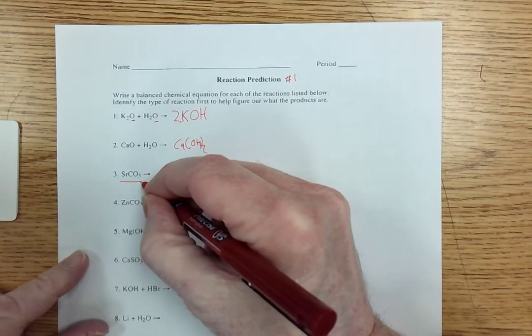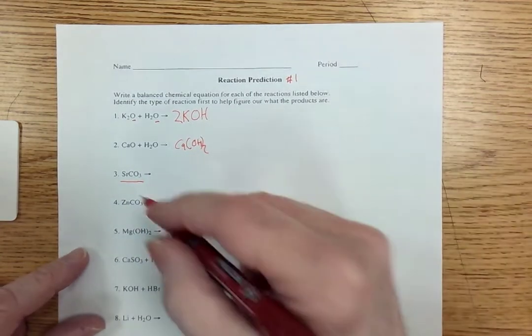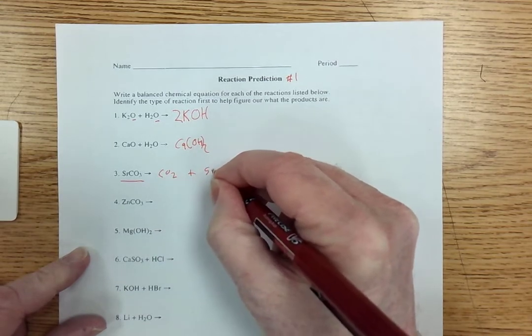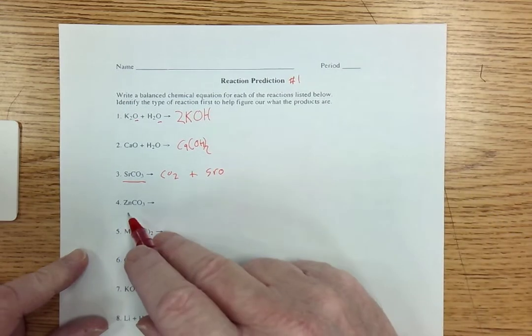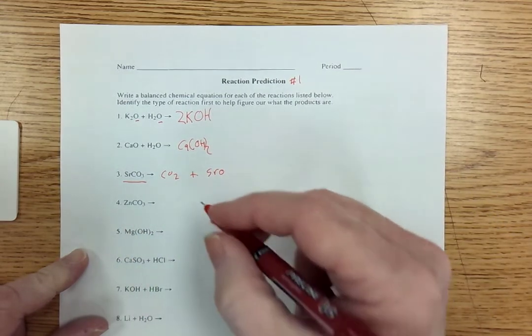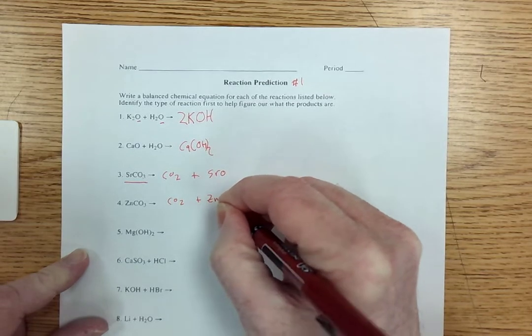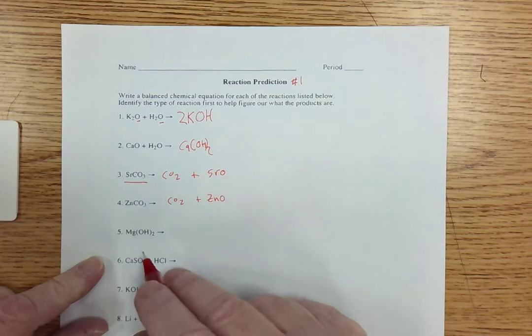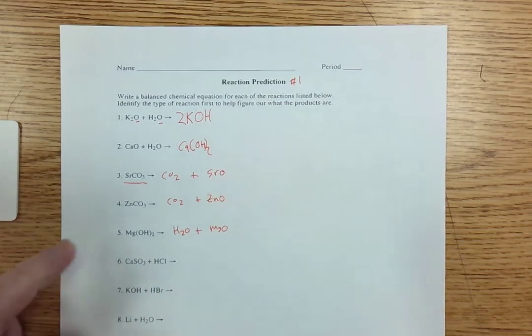Now this is a decomposition for sure because it's only got one reactant. Carbonates like to break down into carbon dioxide and the metal oxide that's left is SrO. This is also a carbonate breaking down. It likes to give off CO2 and ZnO. This is a hydroxide decomposing. Hydroxides like to give off water and MgO.